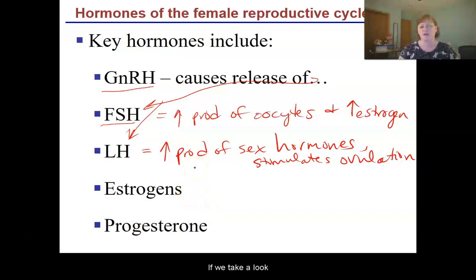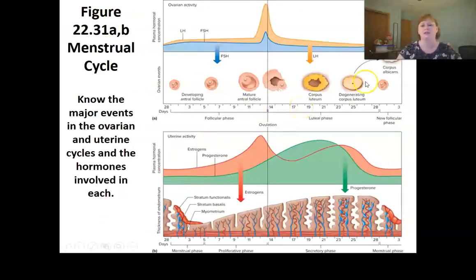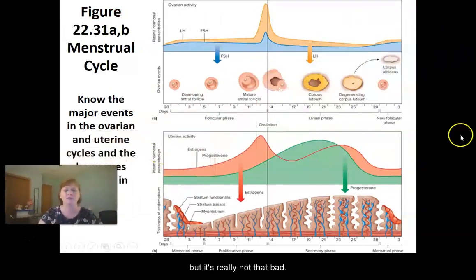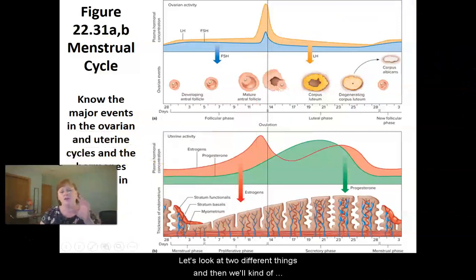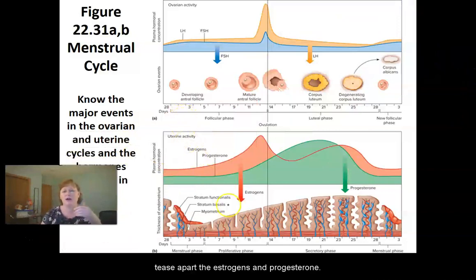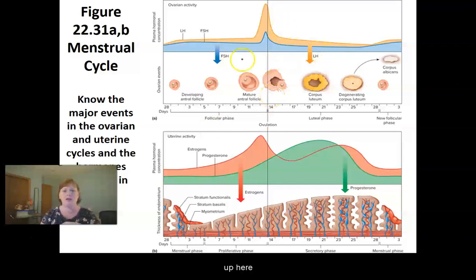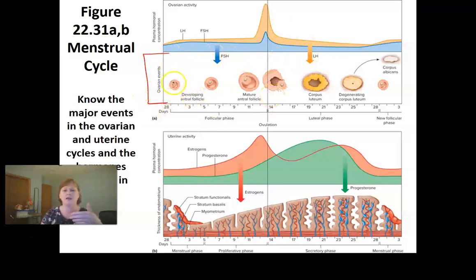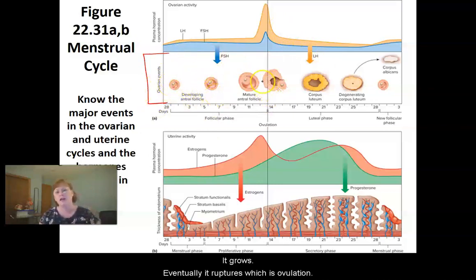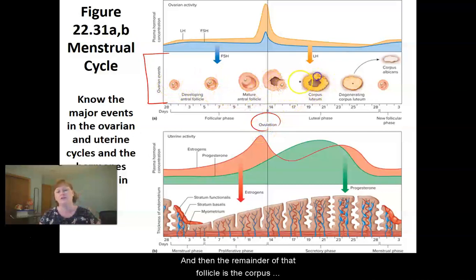If we take a look at this graph here, it can start looking a little complicated, but it's really not that bad. What we're seeing up here is the cycle of what's happening within the ovary. You have a follicle develop, it grows, eventually it ruptures — that's ovulation — and then the remainder of that follicle is the corpus luteum.